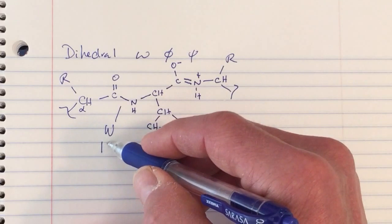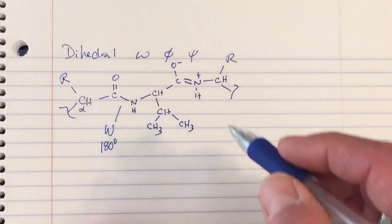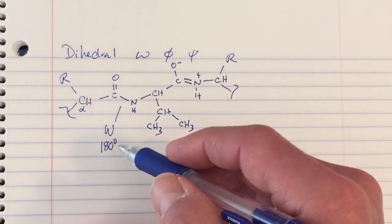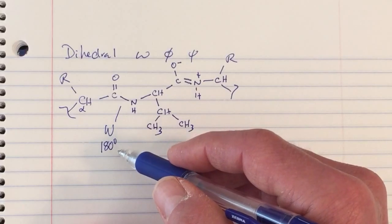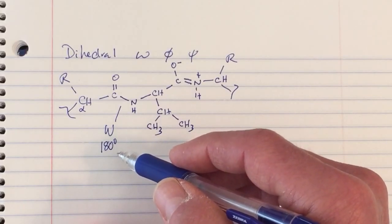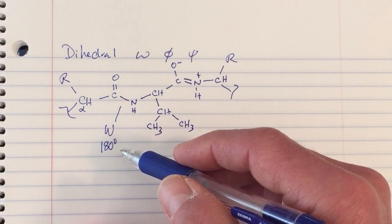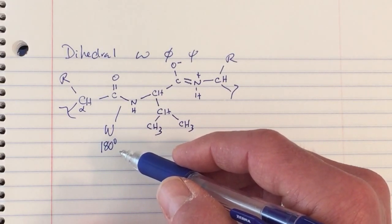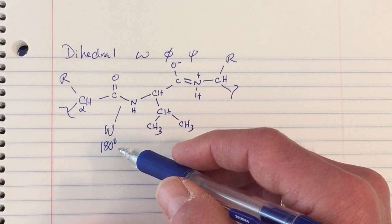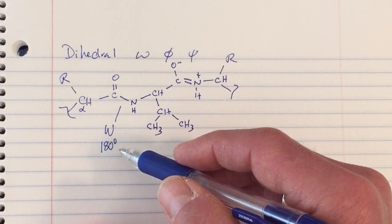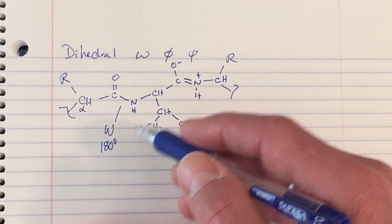We know that Omega usually takes on values of 180 degrees, meaning the trans conformation. Sometimes you'll see cis peptide linkages, especially next to proline residues, but for all other residues the trans is by far more energetically favorable.